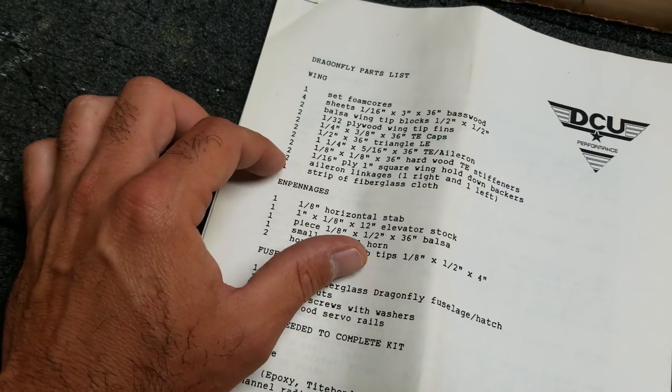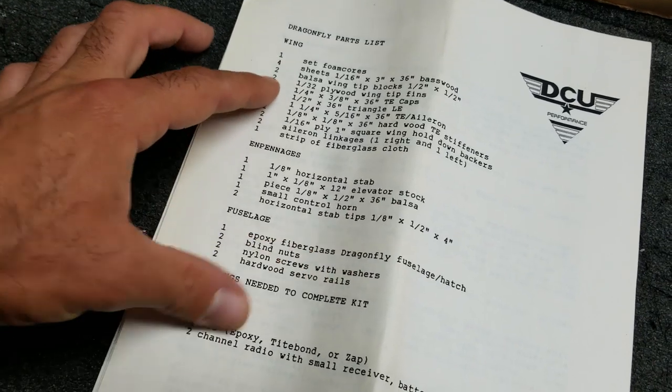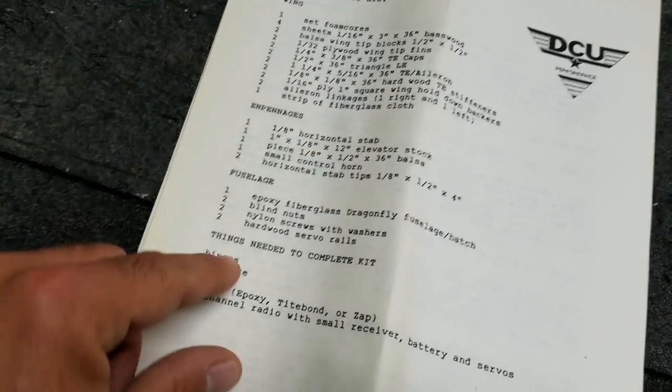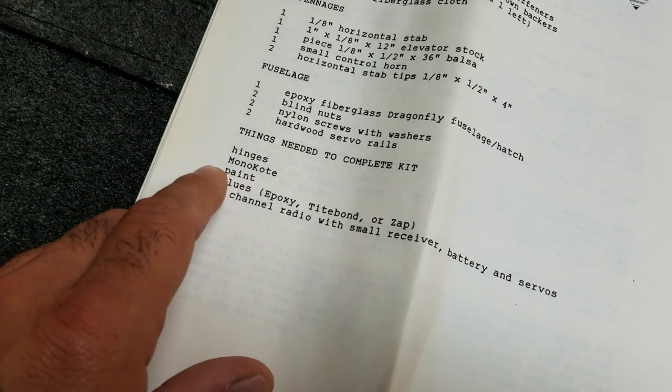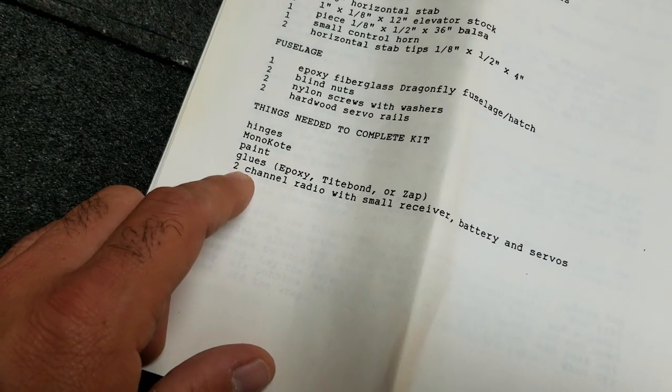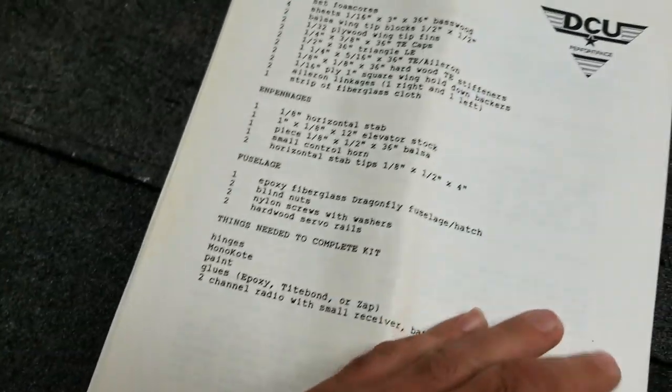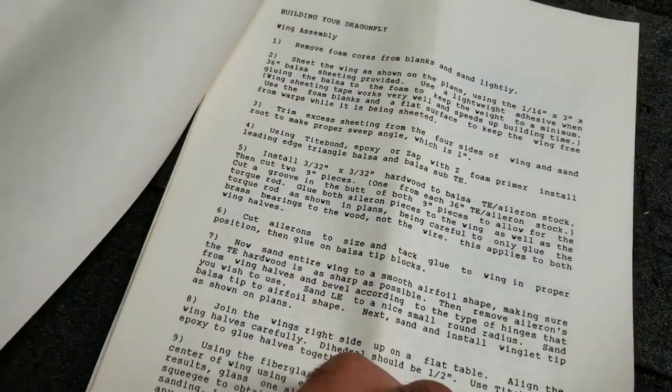Okay, we have an instruction sheet. And the first page is list of contents. Bunch of wood. The wing cores. Parts for the tail. Miscellaneous. Things you need. Hinges. Monocoat or some type of covering. Paint for the fuselage. Various glues. And your radio gear. And I don't think there's any pictures in this instruction manual. It's just photocopied and typed out.